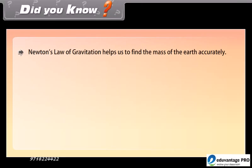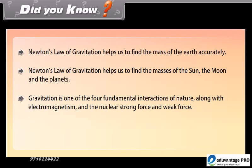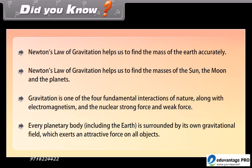Did You Know: Newton's law of gravitation helps us find the mass of the Earth accurately, as well as the masses of the Sun, Moon, and planets. Gravitation is one of the four fundamental interactions of nature, along with electromagnetism, the strong nuclear force, and the weak nuclear force. Every planetary body, including the Earth, is surrounded by its own gravitational field which exerts an attractive force on all objects.